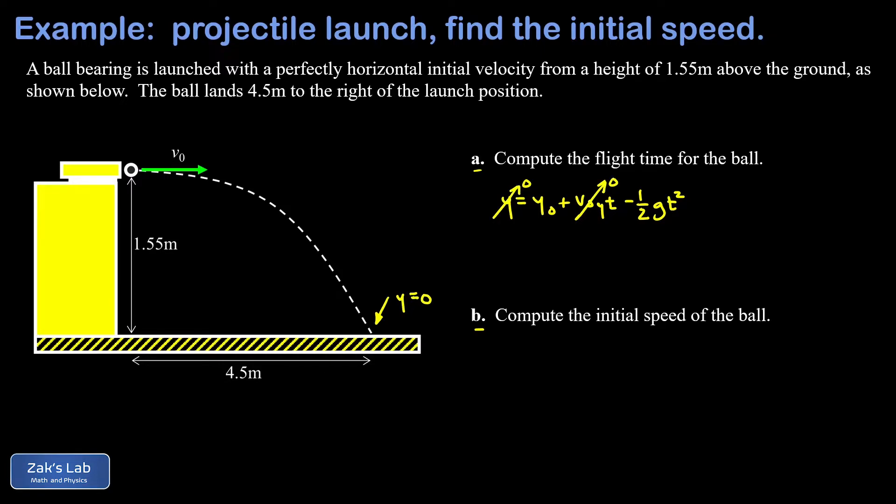There is no Y component to that, and we can just plug our numbers in now. So my initial Y position, that's the initial height of the projectile that was given to us as 1.55 meters. I put in G as approximately 9.8 meters per second squared. And T is the only unknown now.